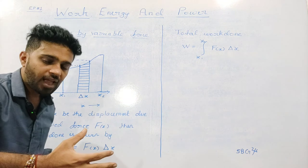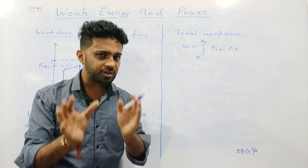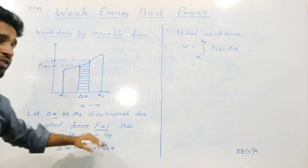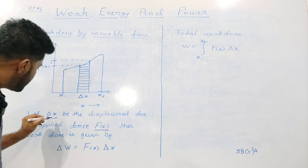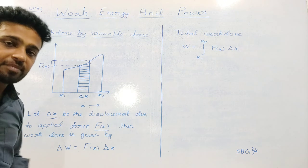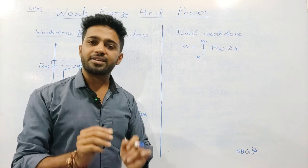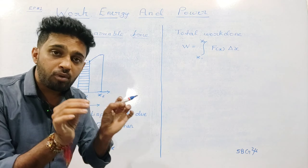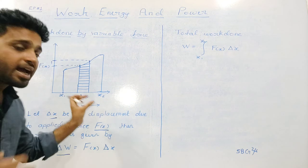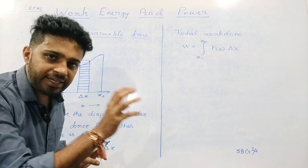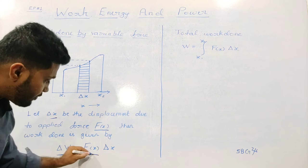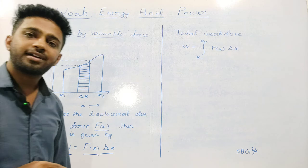Work done equals force into displacement. Let delta x be the small displacement due to the applied force F of x. Delta x is the small displacement along the x-axis. The small amount of work done is delta w. So delta w equals F of x into delta x.